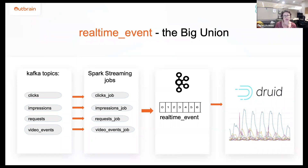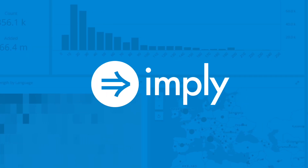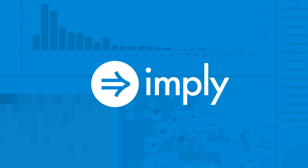Therefore the data source in Druid also contains the union of several types of events — all types of events in one place.